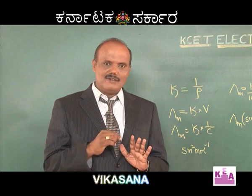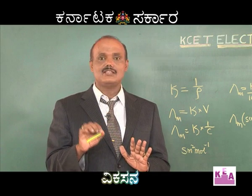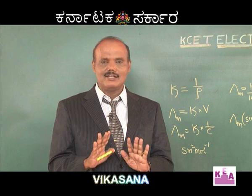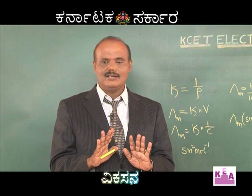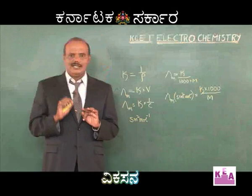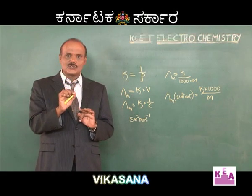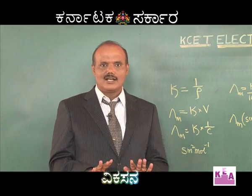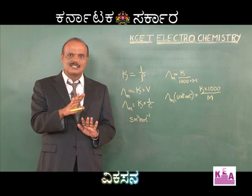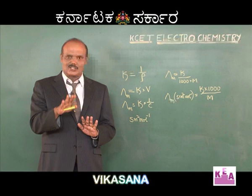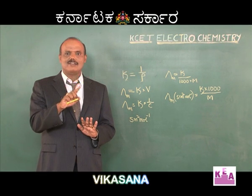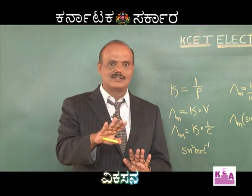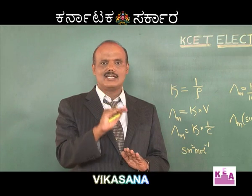Now, this is the variation of conductivity and molar conductivity with dilution. To understand this clearly: conductivity is directly proportional to the number of ions present in the electrolytic solution. On dilution, the number of ions per liter or per meter cube decreases. Therefore, conductivity decreases with increasing dilution.